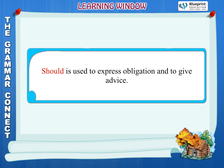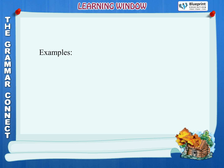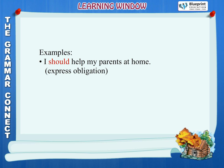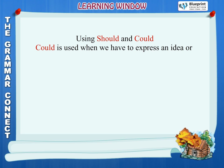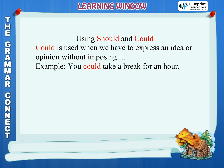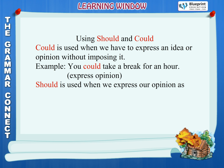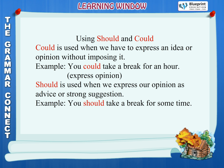Should is used to express obligation and to give advice. Examples: I should help my parents at home — express obligation. You should reach the examination centre well before time — to give advice. Could is used when we have to express an idea or opinion without imposing it. Example: You could take a break for an hour — express opinion. Should is used when we express our opinion as advice or strong suggestion. Example: You should take a break for some time — express opinion as strong suggestion.